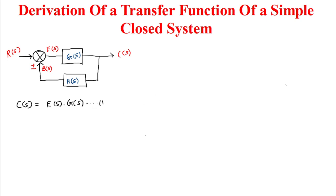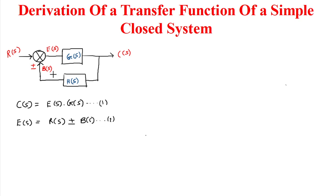Equation 2: the error signal E(s) is given by R(s) ± B(s).